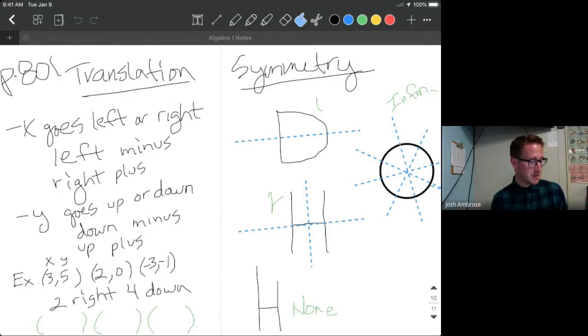All right, so let's jump into this last video here. As you can see, go ahead and open up your textbooks to page 801. We're going to be looking at translations first, then we're going to be going into some symmetry, and then we're going to end it with reflections. So if you want to, go ahead and copy down everything that you see here. You can pause the video, do that. So let's talk about translations first.